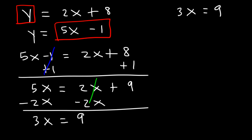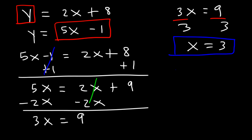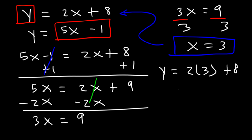Now the last thing we need to do is divide both sides by 3. 9 divided by 3 is 3, so x is equal to 3. Now that we have this value, we can plug it into the first equation, or the second — which will give you the same answer. So it's going to be 2 times 3 plus 8. 2 times 3 is 6, and 6 plus 8 is 14. So y is equal to 14.